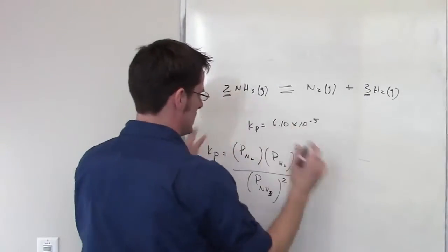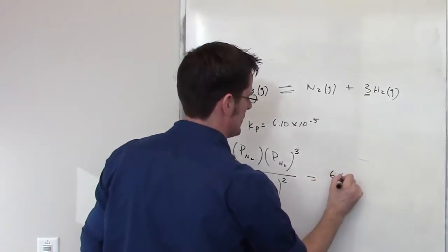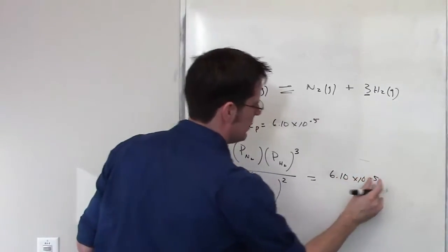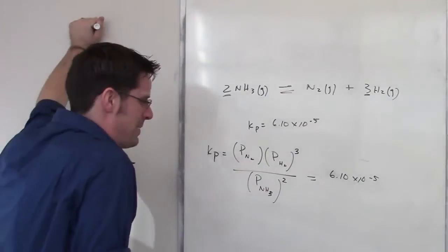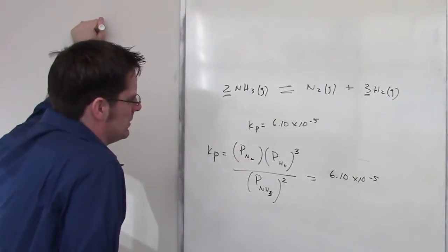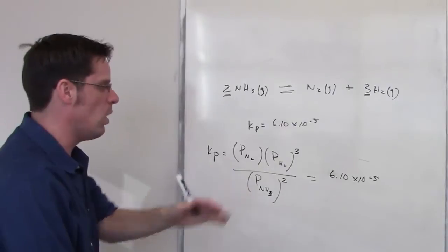This for this system at equilibrium, this temperature is equal to 6.1 times 10 to the negative 5th. Look at that number. What does that number tell us? Is it a big number or a small number? Well, that's a really small number. It's much, much smaller than 1.